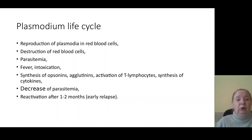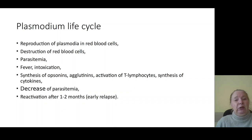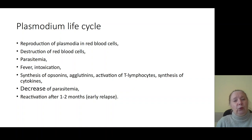Decreasing of parasitemia may be followed by reactivation of infection, because Plasmodium persists in different cells — in phagocytes, macrophages. Reactivation of infection can occur through destruction of phagocytes, penetration of parasites into the blood, and relapse of parasitemia. For example, reactivation of infection after one or two months is an early relapse of malaria.